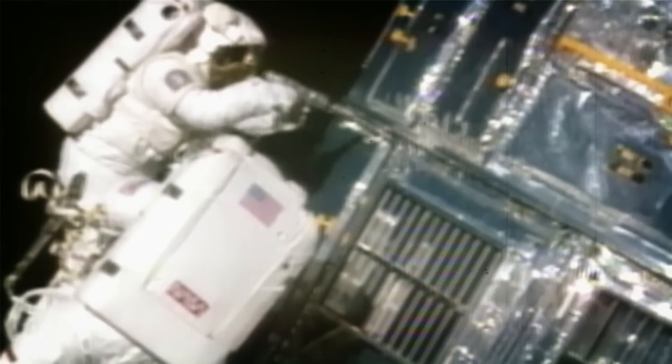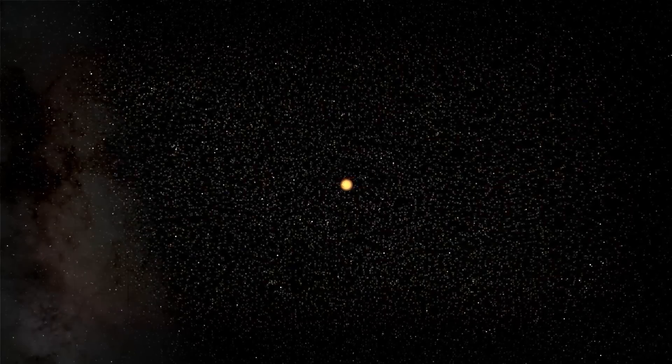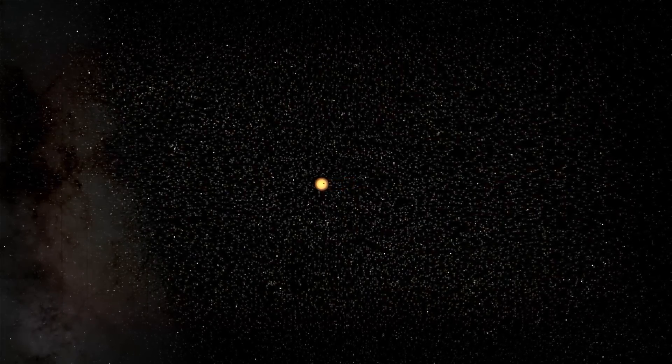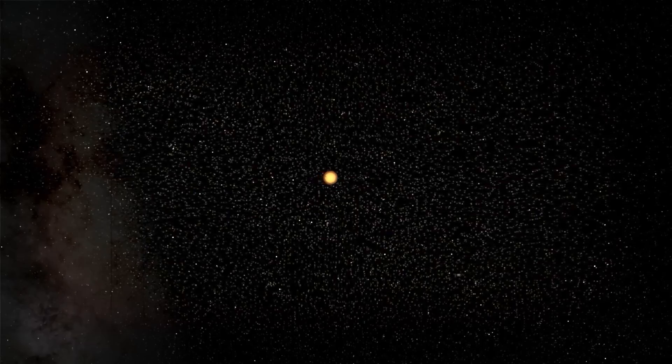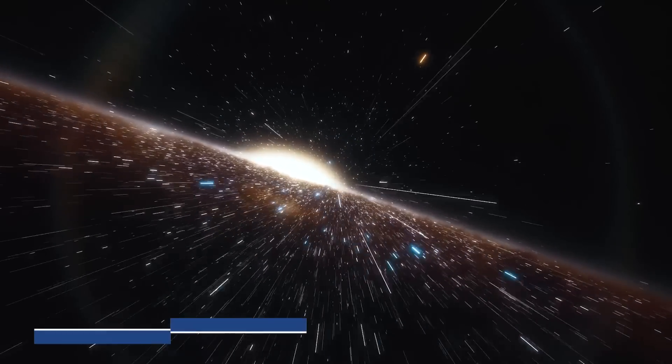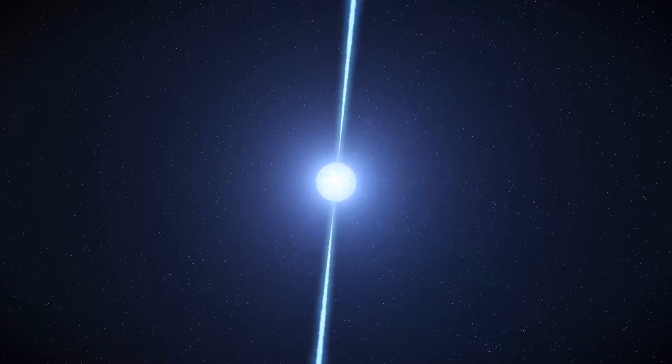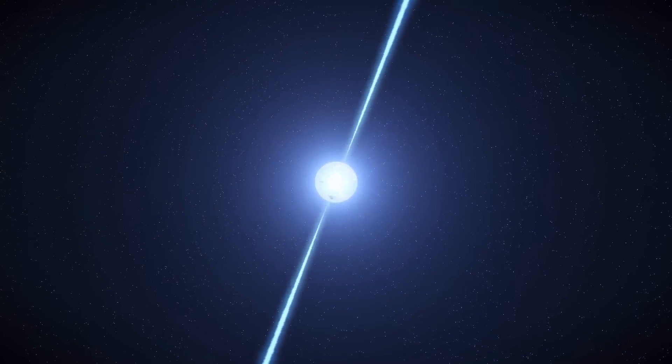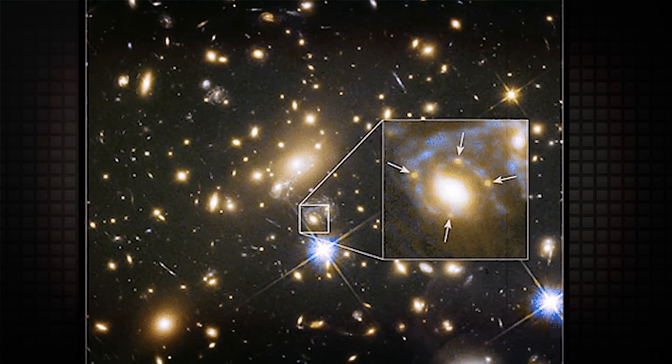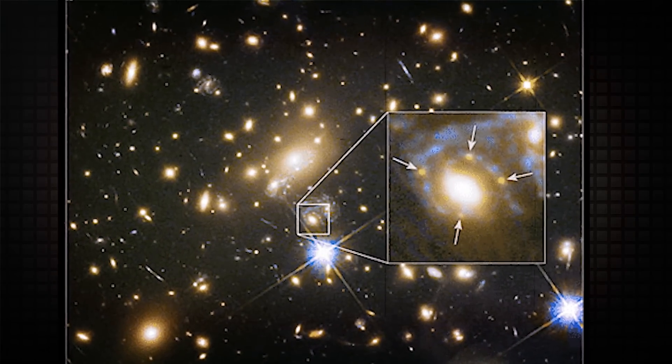At the time, scientists were unable to discern if Earendel is a binary star, despite the fact that most massive stars have at least one smaller partner star. Scientists believe this star to be the oldest and most distant one in the universe. It's a whopping 28 billion light years away from our own planet. It's nearly twice as far as the previous record holder, Icarus, MACS J1149 lensed star 1.